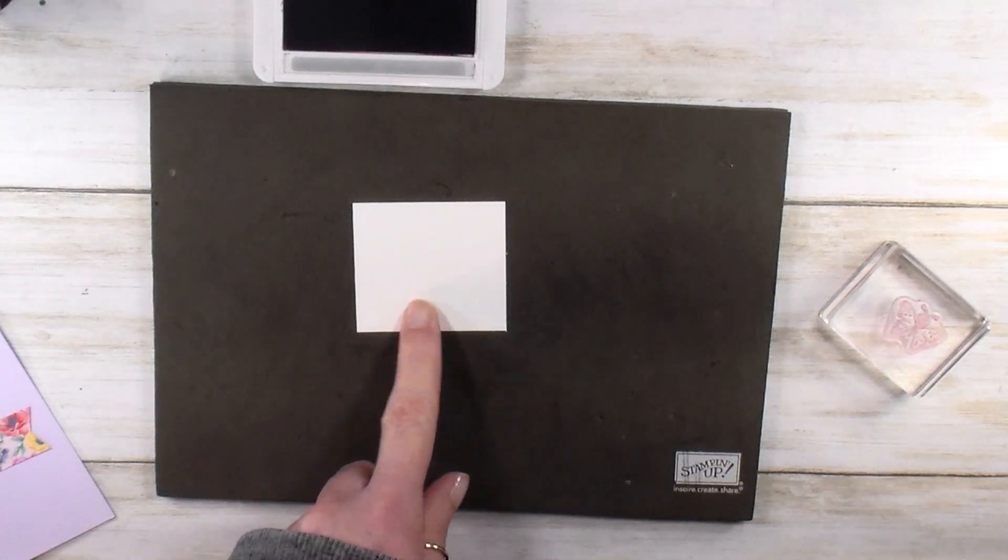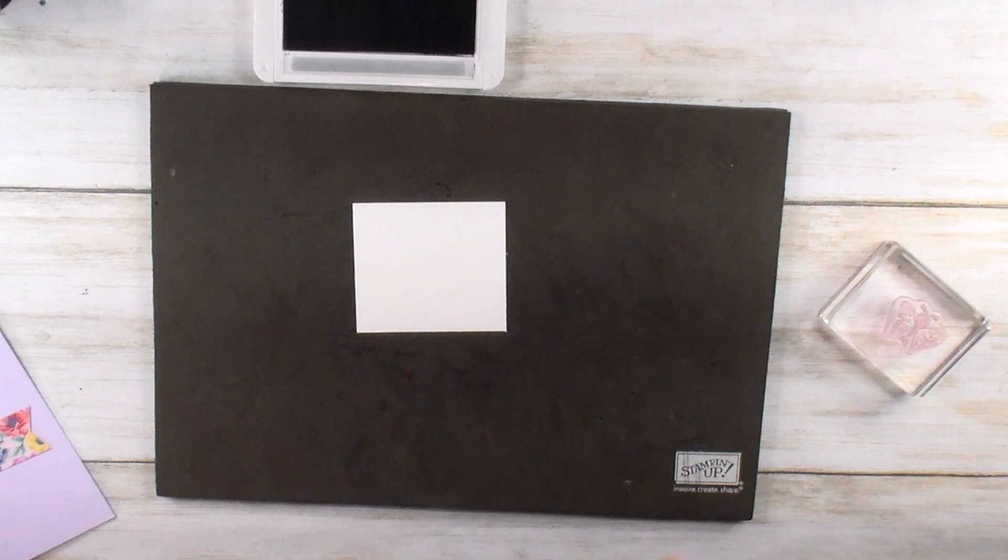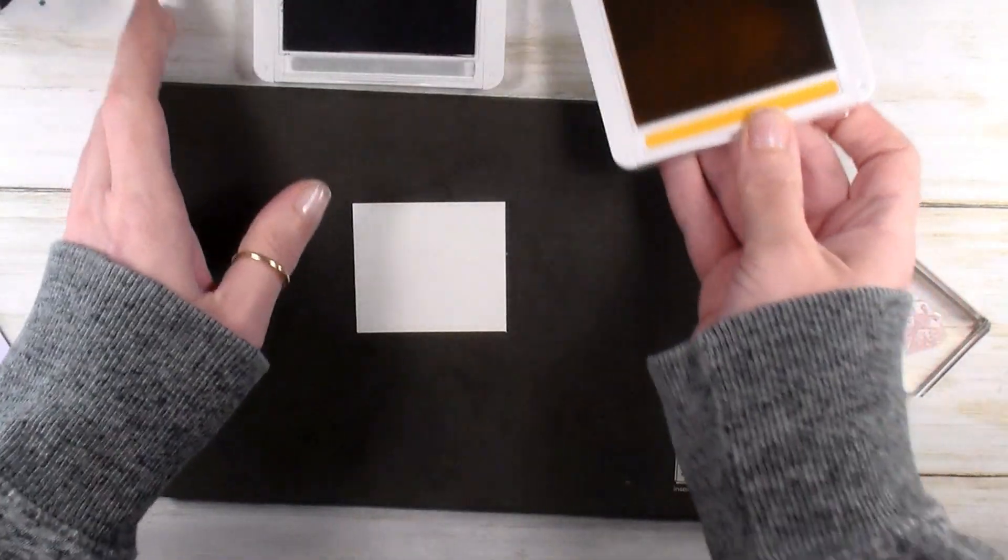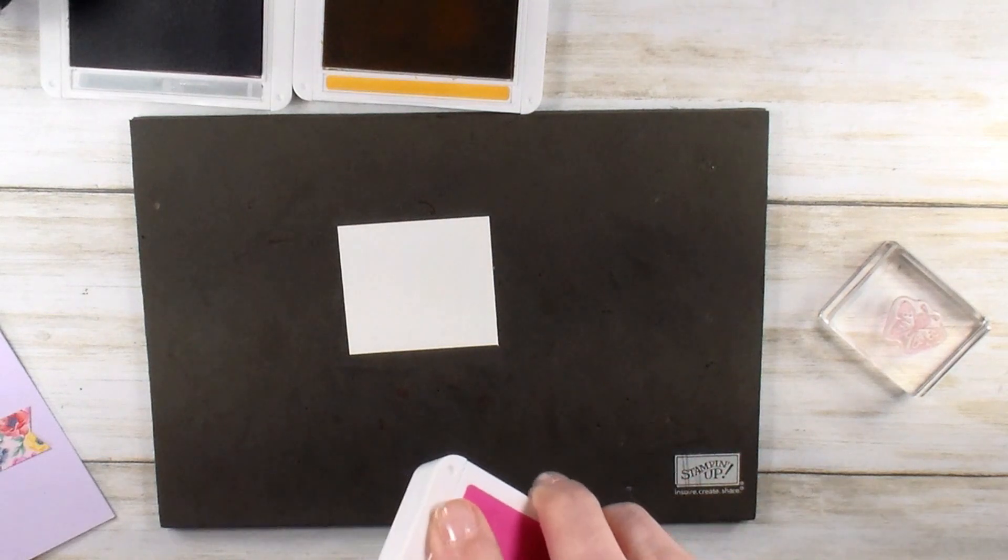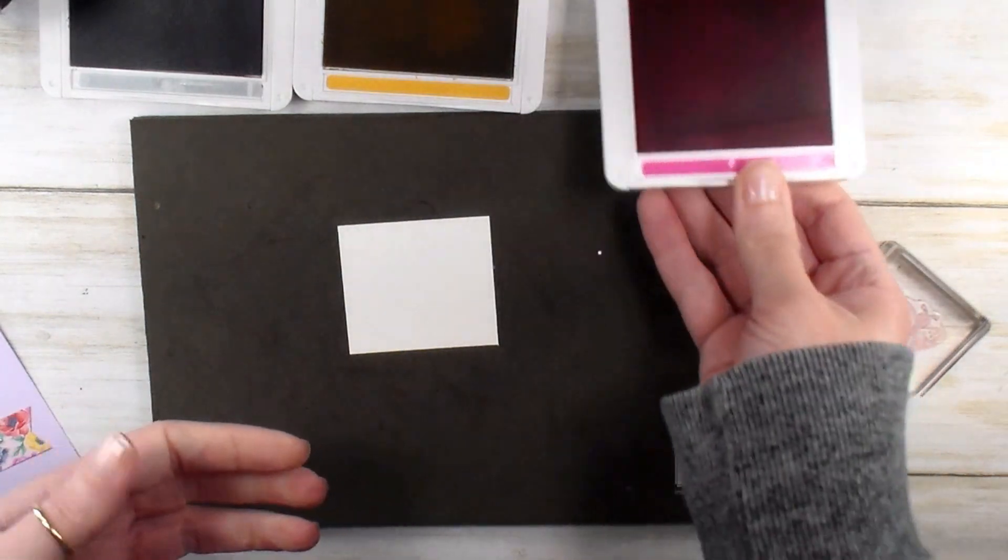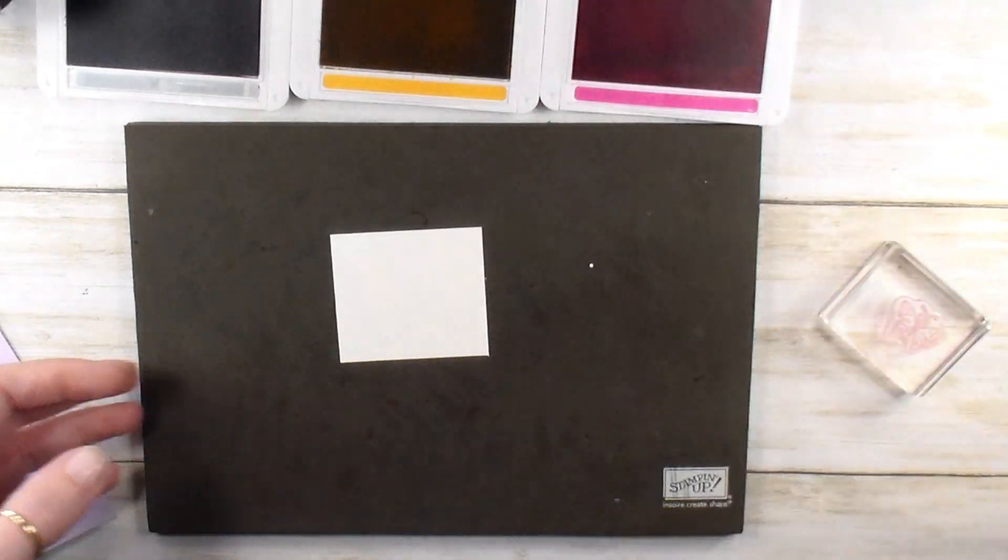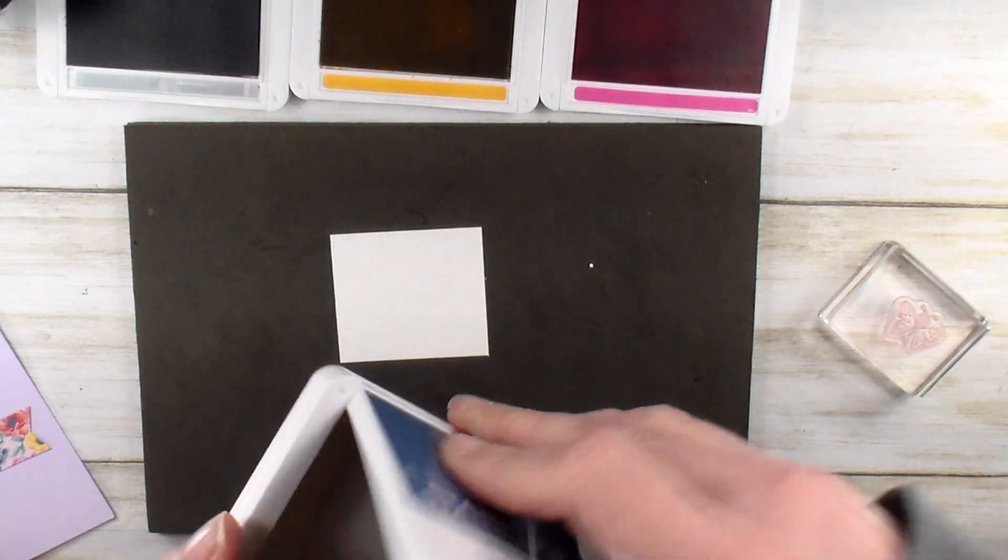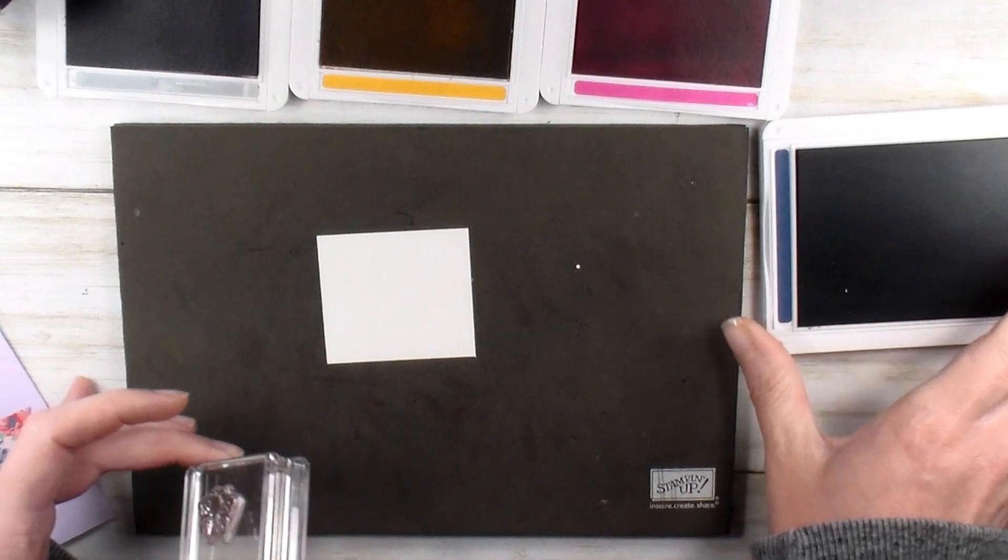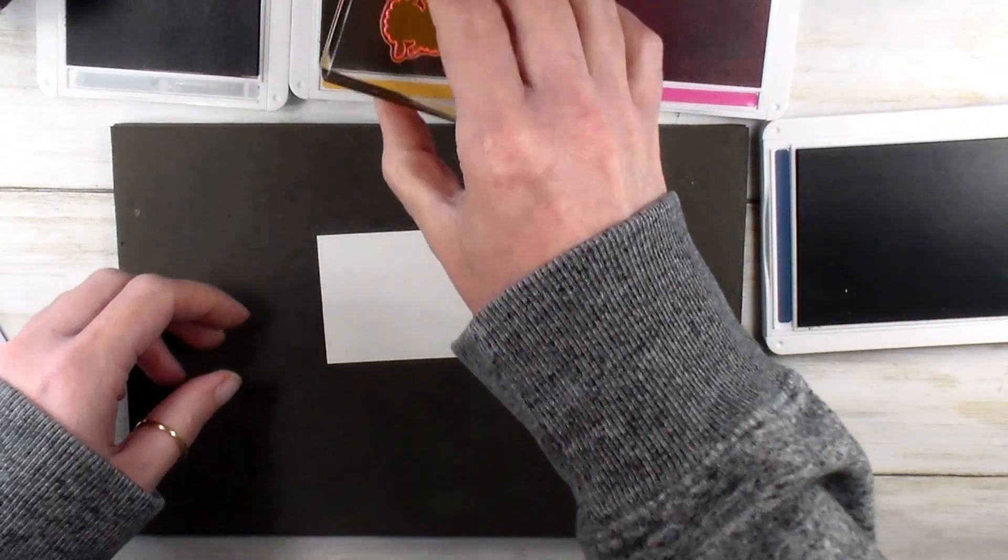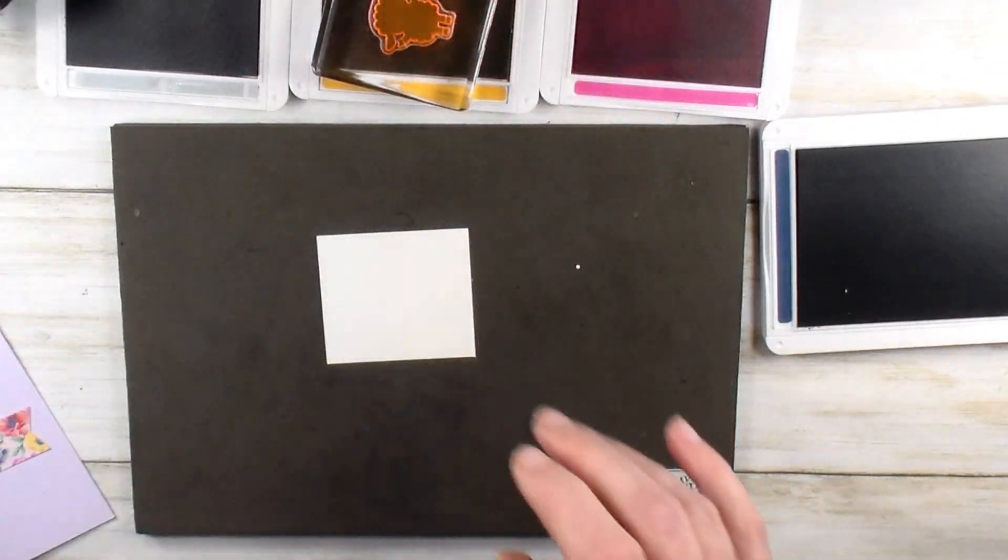While we're stamping, let's keep going, shall we? All right, I've got a scrap of Whisper White cardstock here. I'm going to grab Bumblebee, it's a new in color, and Magenta Madness. We're going to make our sheep yellow and pink. And then I'm going to do their faces in Misty Moonlight. So it is an in color tour here. We'll start with our Bumblebee sheep.